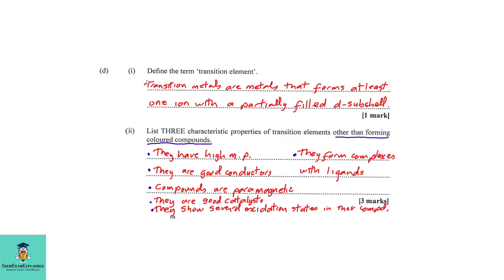Part D1: Define the term transition element. Well, transition metals or transition elements are metals that form at least one ion with a partially filled D subshell.